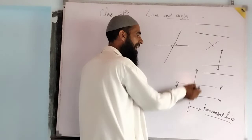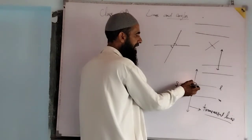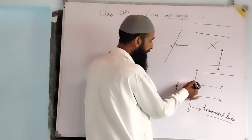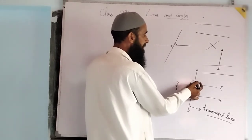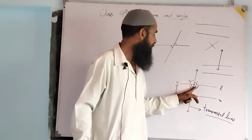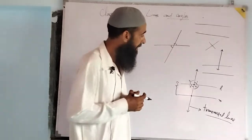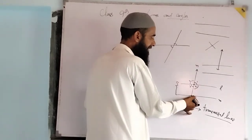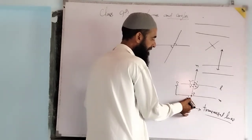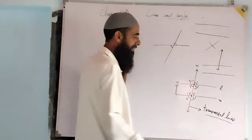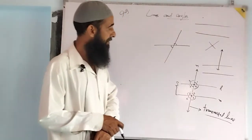Where the transversal intersects line L, we get vertically opposite angles. At line M, the transversal intersects and we get angles 5 and 6 as vertically opposite angles — they are equal — and angle 7 is equal to angle 8; these are also vertically opposite angles, as we discussed in the previous lecture.